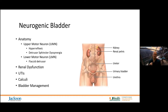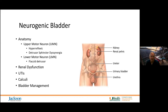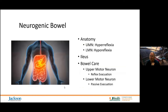Neurogenic bladder is the primary cause of autonomic dysreflexia. We'll talk through upper motor neuron versus lower motor neuron bladder management. Bladder mismanagement was actually one of the major causes of death in people with spinal cord injury who survived more than a couple of months prior to the 1970s — they would die from acute renal failure. We're going to talk through renal dysfunction, urinary tract infections, calculi, and bladder management.